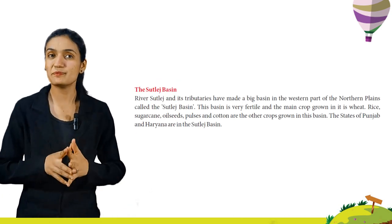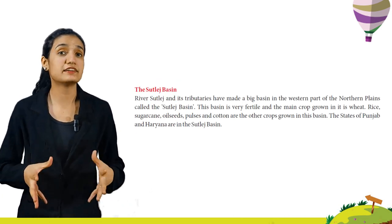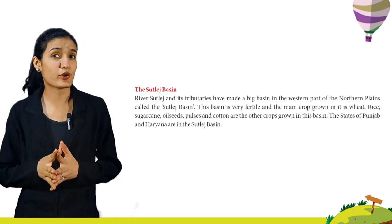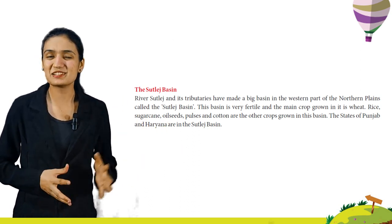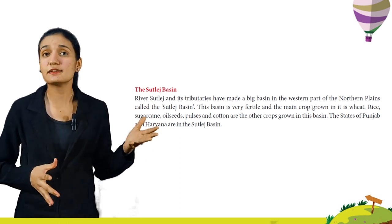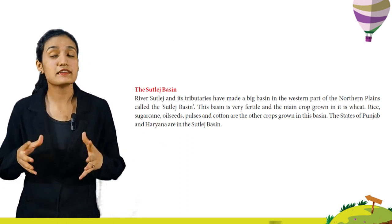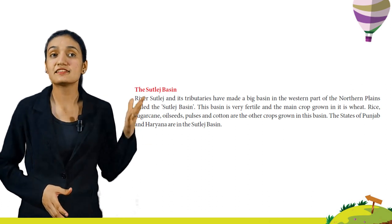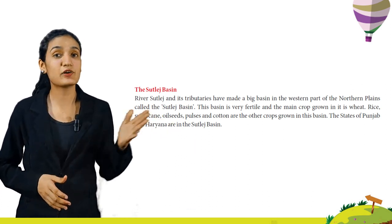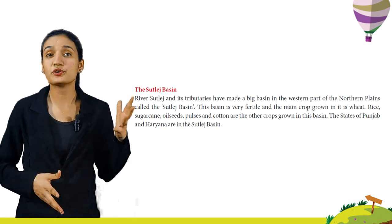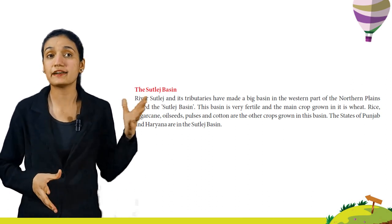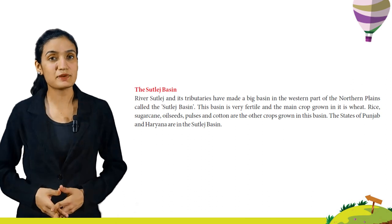River Satlaj and its tributaries have made a big basin in the western part of the Northern Plains called the Satlaj basin. This basin is very fertile and the main crops grown in it are wheat, rice, sugarcane, oilseeds, pulses and cotton. The states of Punjab and Haryana are in the Satlaj basin.